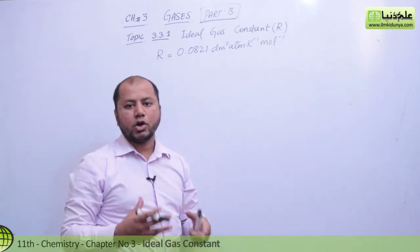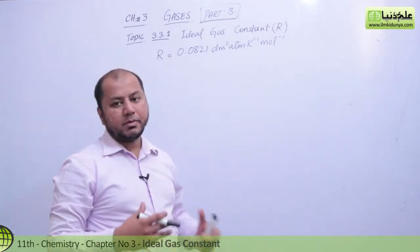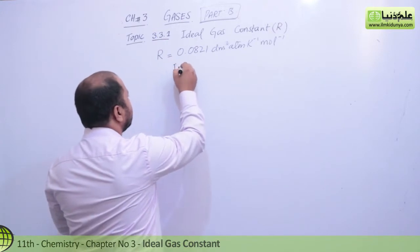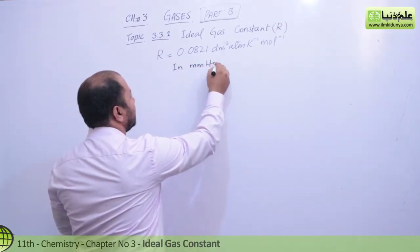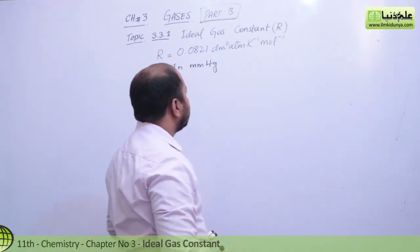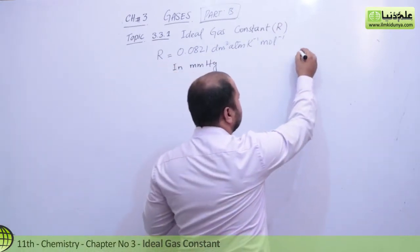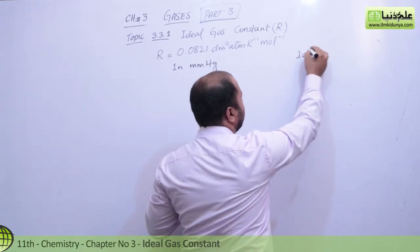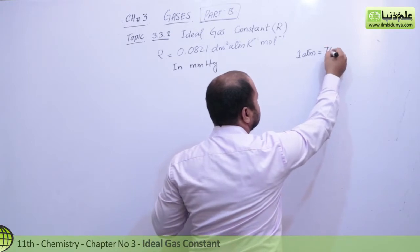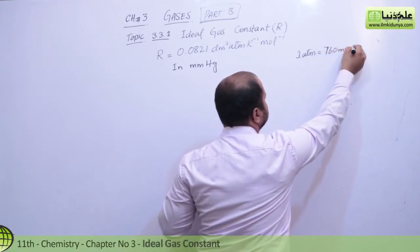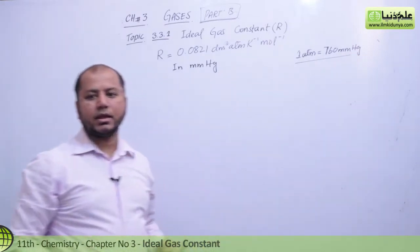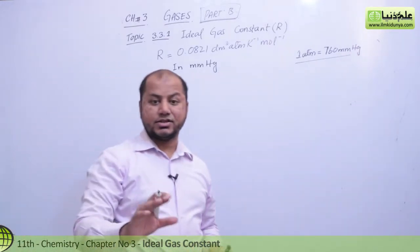We have derived the R value using dm³ for volume and atm for pressure. Now we want to convert it into mm of Hg. This is a constant fact you must remember: 1 atm is equal to 760 mm of Hg.